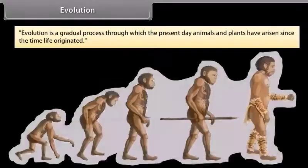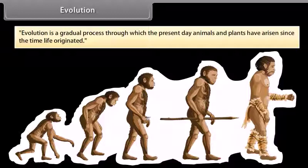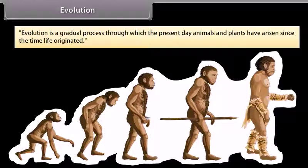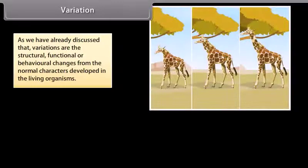Evolution is a gradual process through which the present-day animals and plants have arisen since the time life originated. As we have already discussed, variations are the structural, functional, or behavioral changes from the normal characters developed in living organisms.